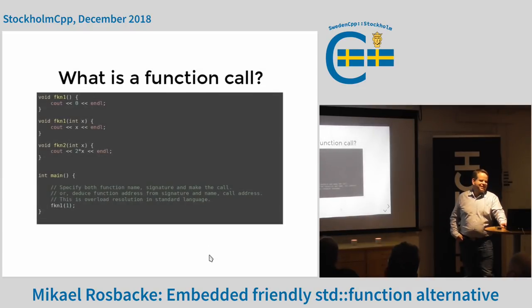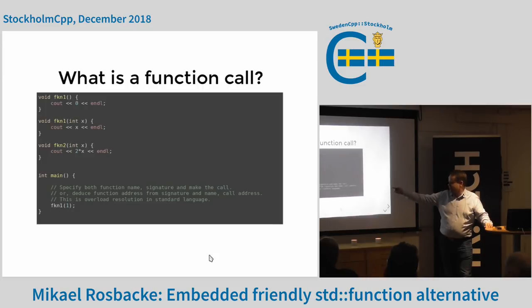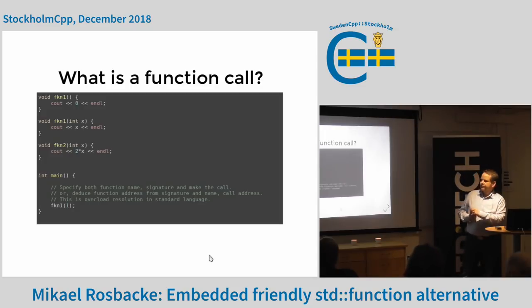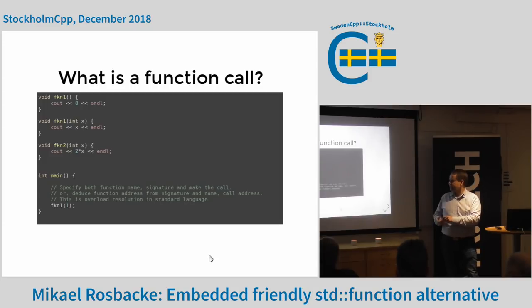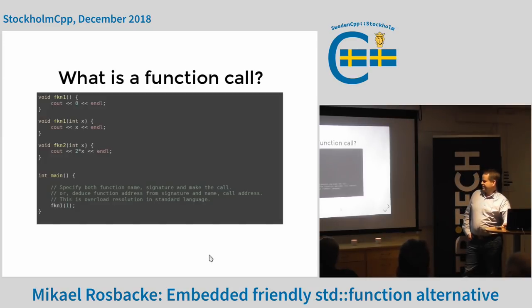So what is a function call, back to basics 101? In the main function, when you actually do the function call, there are a number of things happening. First you've got the name, but you also have two different functions with the same name, so you have to do overload resolution. Which means you need to know the signature of the function - we're passing in an int, we get the signature int, and it selects the right one.